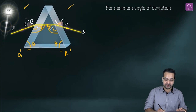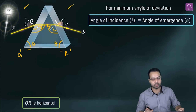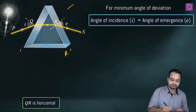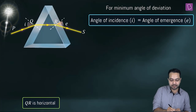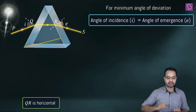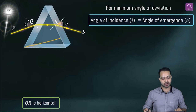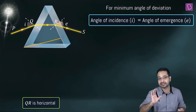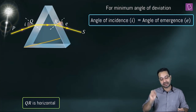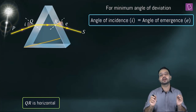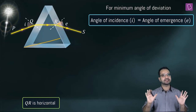So we have solved our question. But there is some clarification required. Now let's assume the base was something like this — tilted. Would this affect the path of light? Obviously not. In this case, is QR parallel to the base? No, it is not. So we have to be very careful: in case of minimum deviation, the light ray inside the prism becomes parallel to the base only when the base angles are equal, otherwise not.